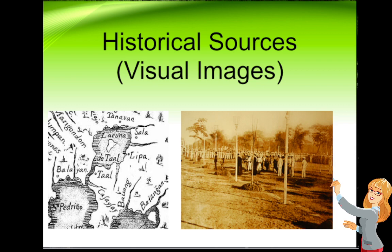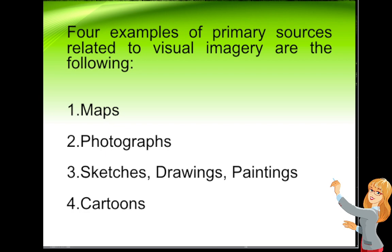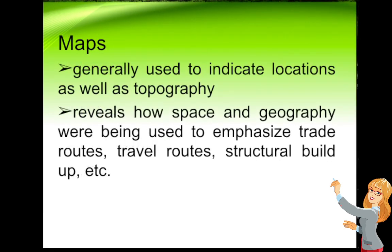These are historical sources — mainly primary sources with visual images as part of them. We have four classifications of visual imagery primary sources: maps or photographs, sketches, drawings, paintings, and cartoons. First, we have maps. Maps reveal how space and geography are being used to emphasize trade routes, travel routes, structural buildup, and so on.